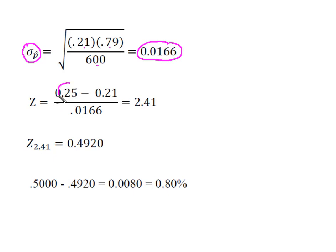So now I've plugged it into my z-score formula. Here's my p hat, which we calculated. Here's my p that was given. My standard error of the proportion gives me a z-score of 2.41.